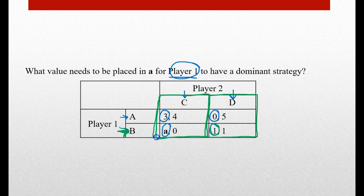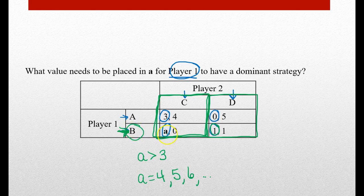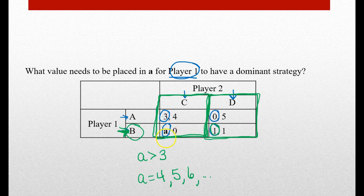Coming back to the first column where player two is choosing option C, we have three and A. We've already said B should be the dominant strategy, which means B should be the larger number. So A has to be larger than three — A could be four, five, six, and so on. Any number larger than three means B would be a dominant strategy. If you're trying to figure out a number, figure out the dominant strategy first, then determine whether A should be larger or smaller depending on which option is dominant.